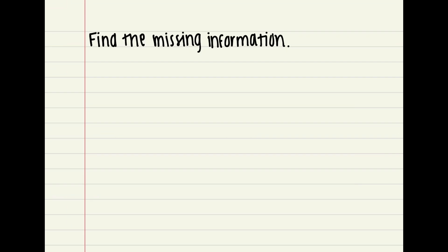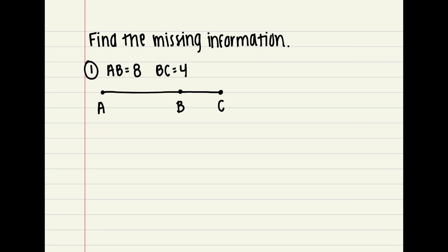In the next examples, I'm going to give you either the parts or the whole of the segments and I want you to find the missing information. In example one, I give you points A, B, C. I tell you that AB is equal to 8 and BC is equal to 4. So we always want to write our Segment Addition Postulate first. Remember, it's part plus part: the first part is from A to B, plus the second part is from B to C, and that is equal to the whole segment from A to C.